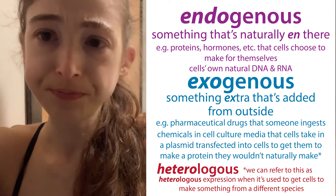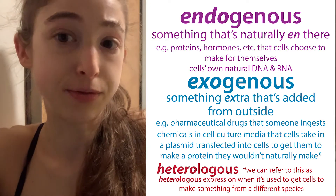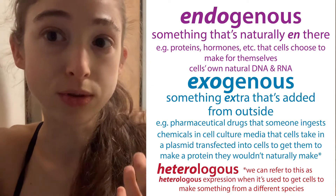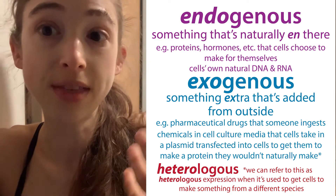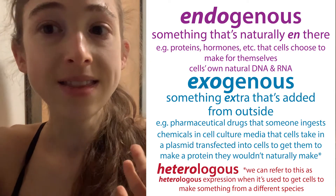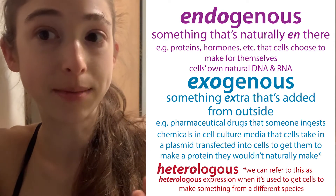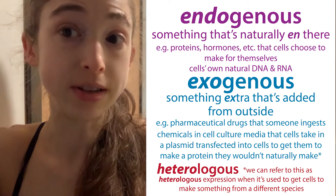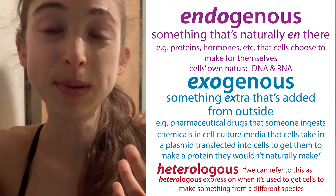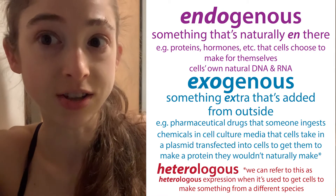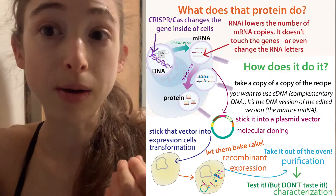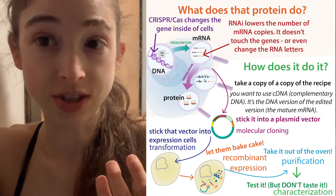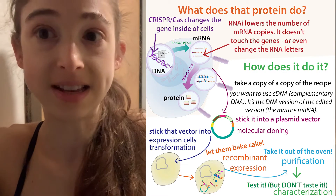Similarly, if we're doing cell culture, we can add things exogenously by adding chemicals to the media — the food that the cells are taking in. That's all exogenous; the cells aren't making those things themselves. So often when we're talking about endogenous and exogenous, it's because what we really care about is the endogenous stuff — what the cells are naturally doing.